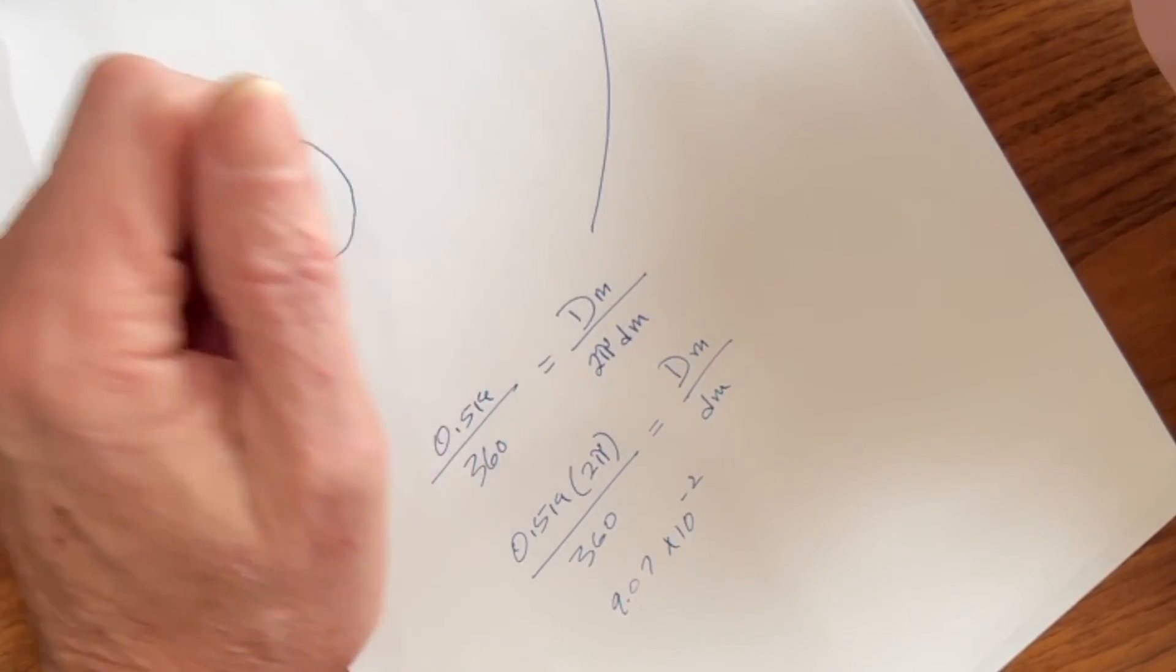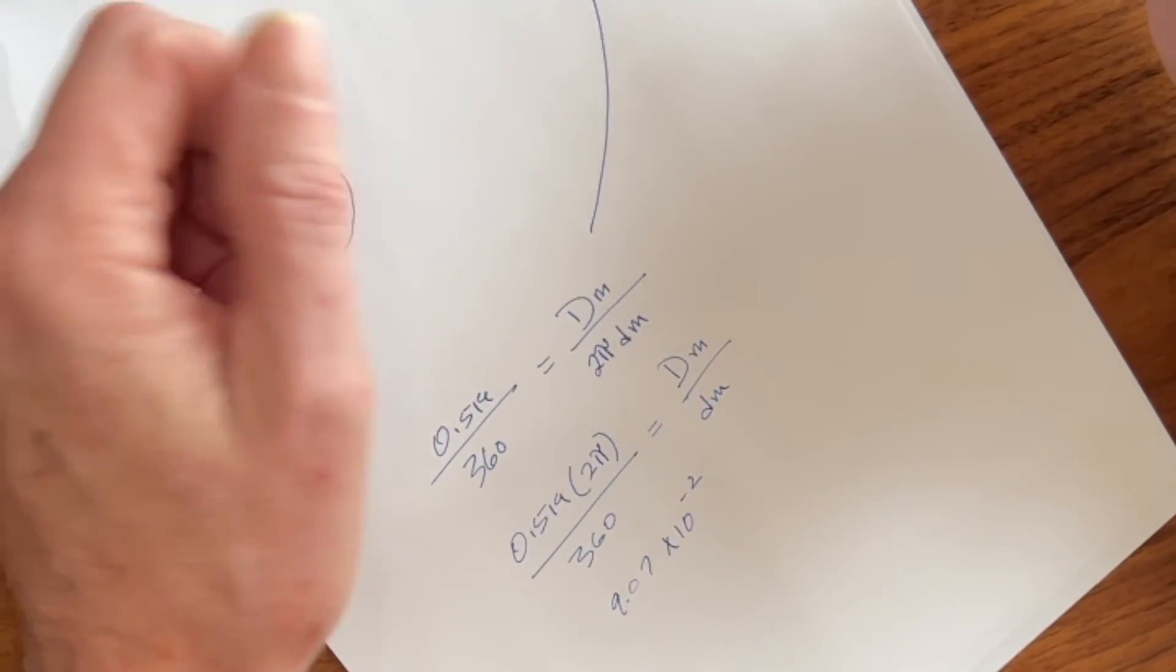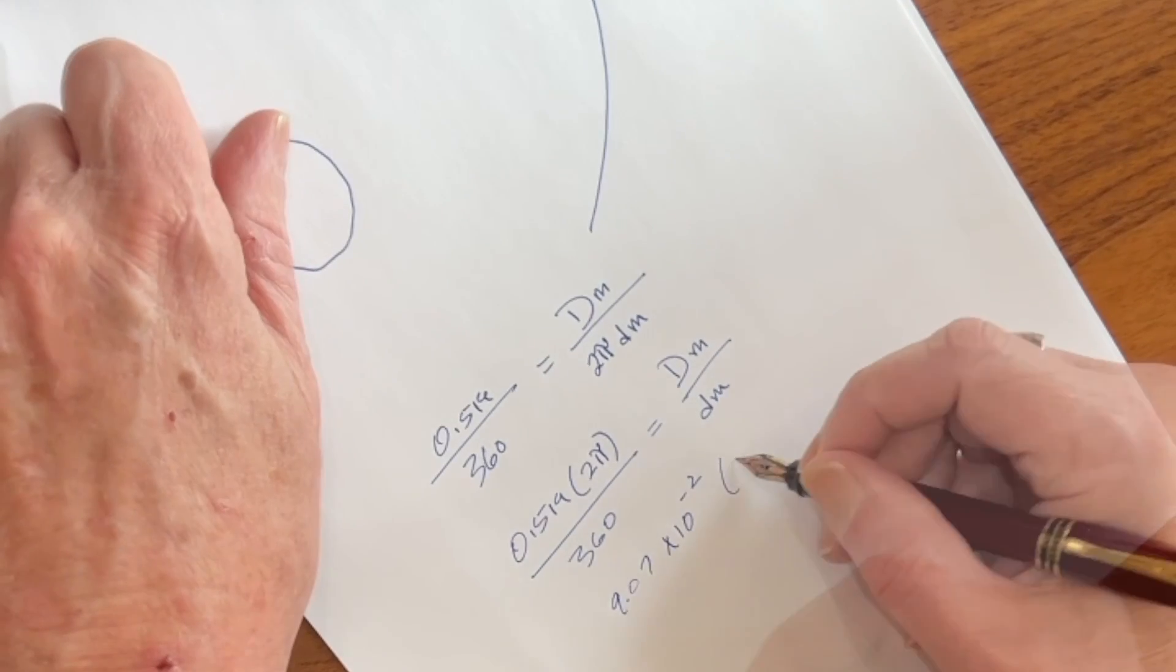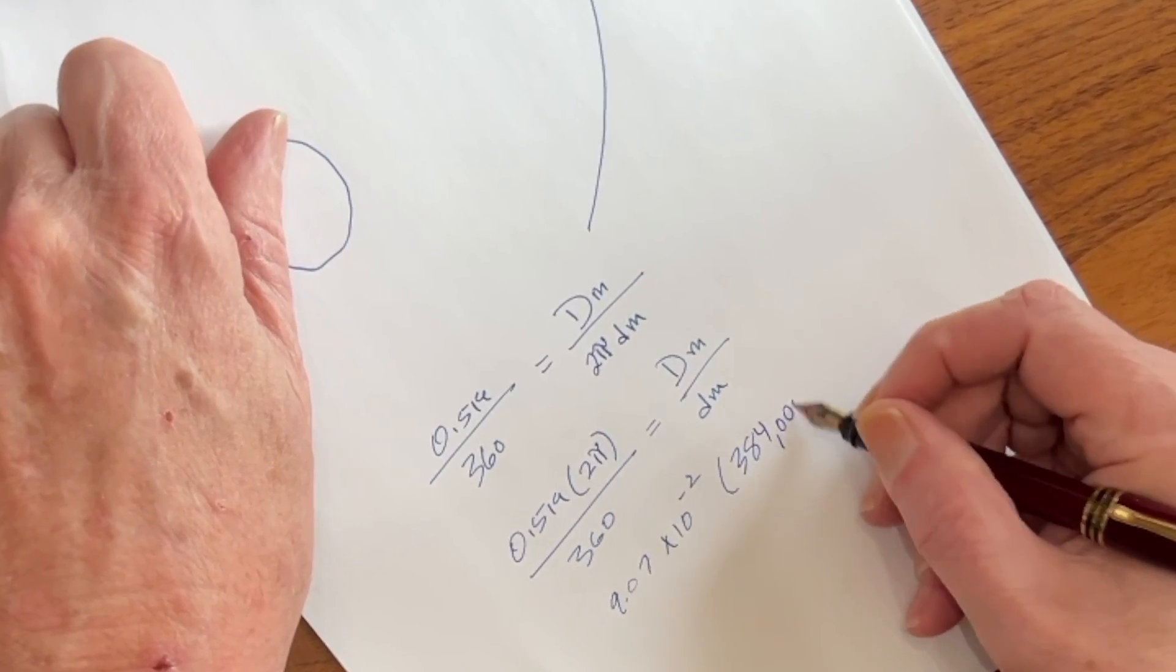Except in our very first video, we found the distance to the moon using the solar eclipse, and that distance to the moon was 384,000 kilometers.